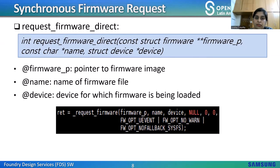Firmware_request_direct loads firmware directly without a user mode helper. Arguments include: firmware_p, name of the firmware file, and device. The flags used are OPT_UEVENT, OPT_NO_WARN, and OPT_NO_FALLBACK_SYSFS, meaning the fallback mechanism sends a k-object uevent without warnings and the sysfs fallback is disabled. This function is similar to request_firmware but does not fall back to user mode helper, even if firmware couldn't be loaded directly from the filesystem. It is useful for loading optional firmwares that aren't always present, avoiding the extra long timeouts of UMH.